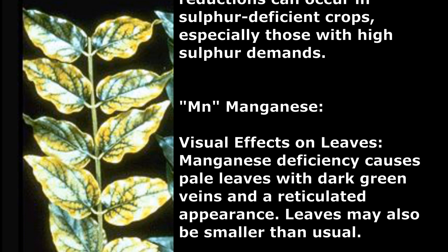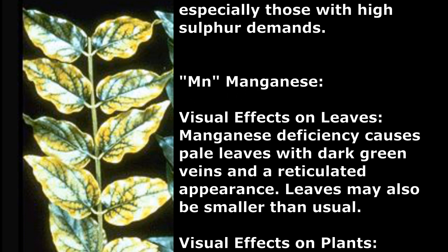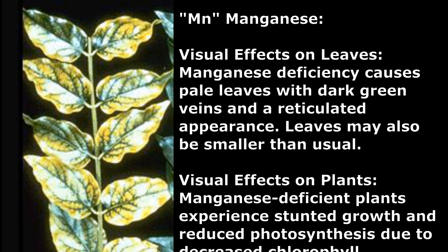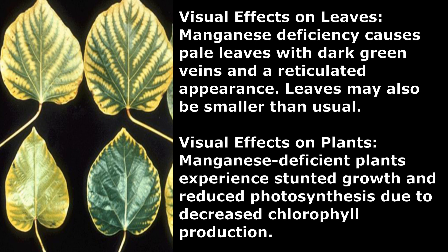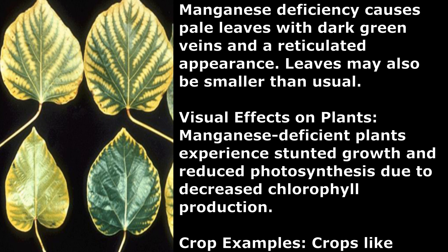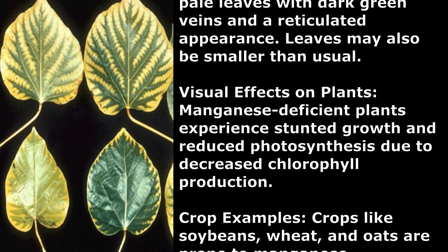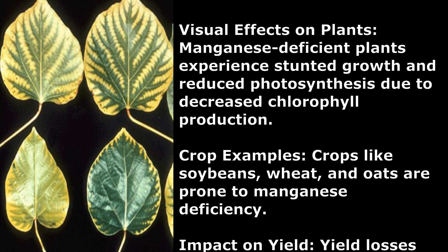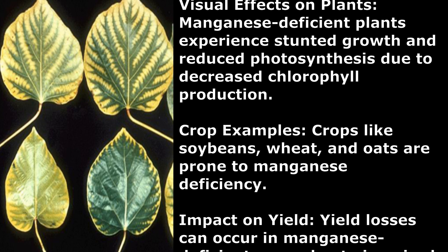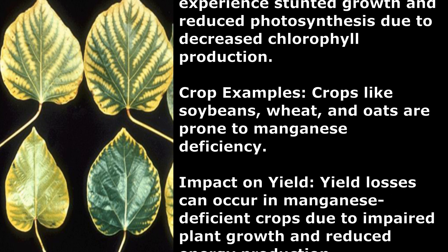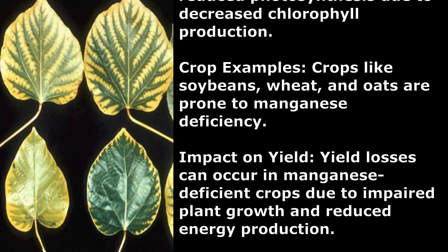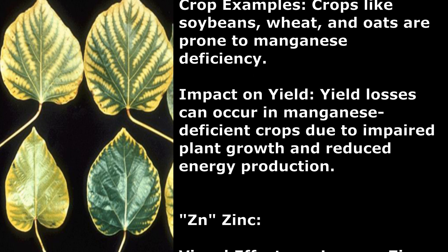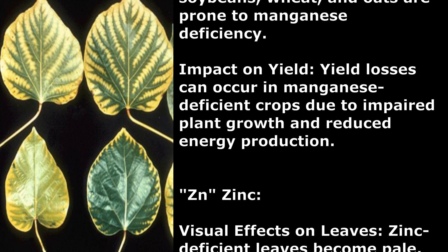Manganese. Visual Effects on Leaves: Manganese deficiency causes pale leaves with dark green veins and a reticulated appearance. Leaves may also be smaller than usual. Visual Effects on Plants: Manganese-deficient plants experience stunted growth and reduced photosynthesis due to decreased chlorophyll production. Crop Examples: Crops like soybeans, wheat, and oats are prone to manganese deficiency. Impact on Yield: Yield losses can occur due to impaired plant growth and reduced energy production.